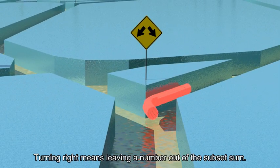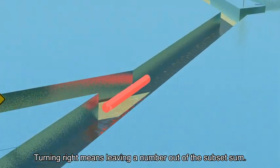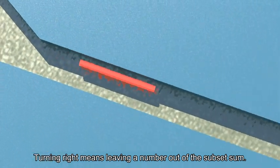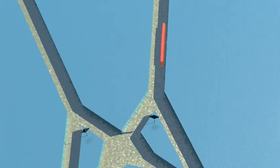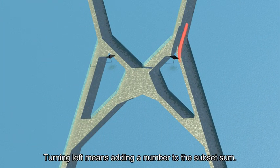Turning right means leaving a number out of the subset sum. Turning left means adding a number to the subset sum.